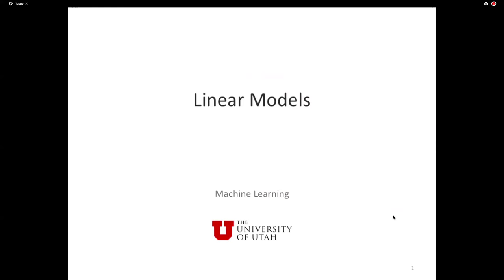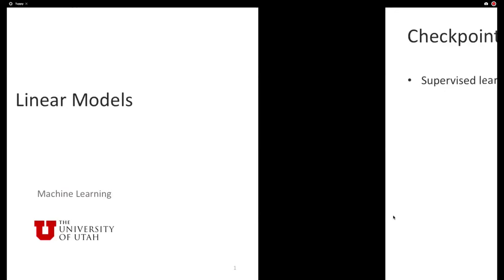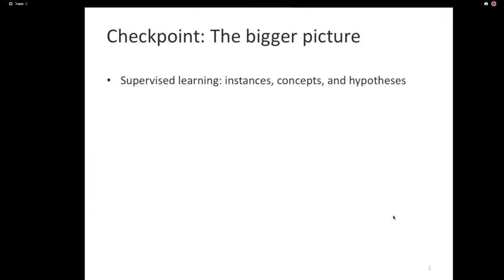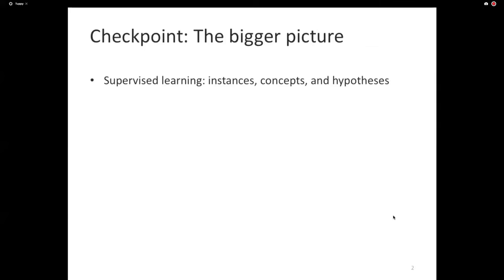We're going to start talking about linear models. Before we get into the linear models, let's just take a brief look at where we are. We've looked at supervised learning, this idea that we have instances that are assigned labels. We've talked about concepts. Concepts are functions that we don't have access to, but we are hoping to approximate. And hypotheses are the functions that our learner produces.